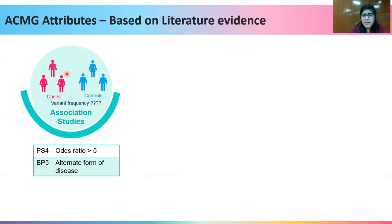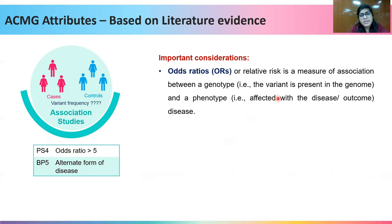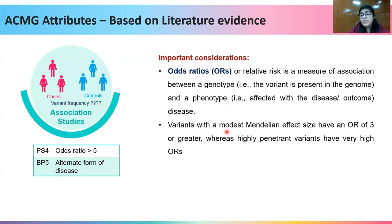In the case of association studies done using GWAS, PS4 criteria can be given when the odds ratio is greater than 5. Odds ratio or relative risk is a measure of association between a genotype and a phenotype. Variants with a modest Mendelian effect size have an OR of 3 or greater, whereas highly penetrant variants have very high odds ratios. We have kept the threshold at greater than 5 for stringency in assigning the PS4 attribute.